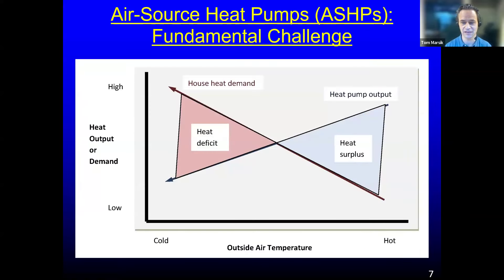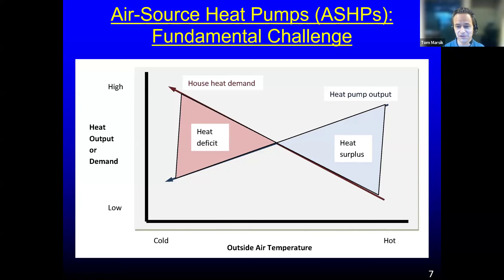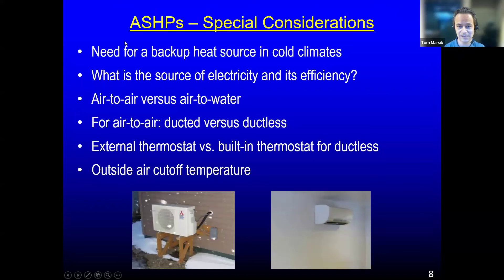There is a fundamental challenge with air source heat pumps: the colder it is outside, the more difficult it is to extract heat from the outside air, so heat output drops as temperatures fall. At the same time, your building's heat demand increases as it gets colder. At some point, if it gets really cold, the heat pump stops working altogether — right when you need the heat source most. That means we need a backup heat source in very cold climates.